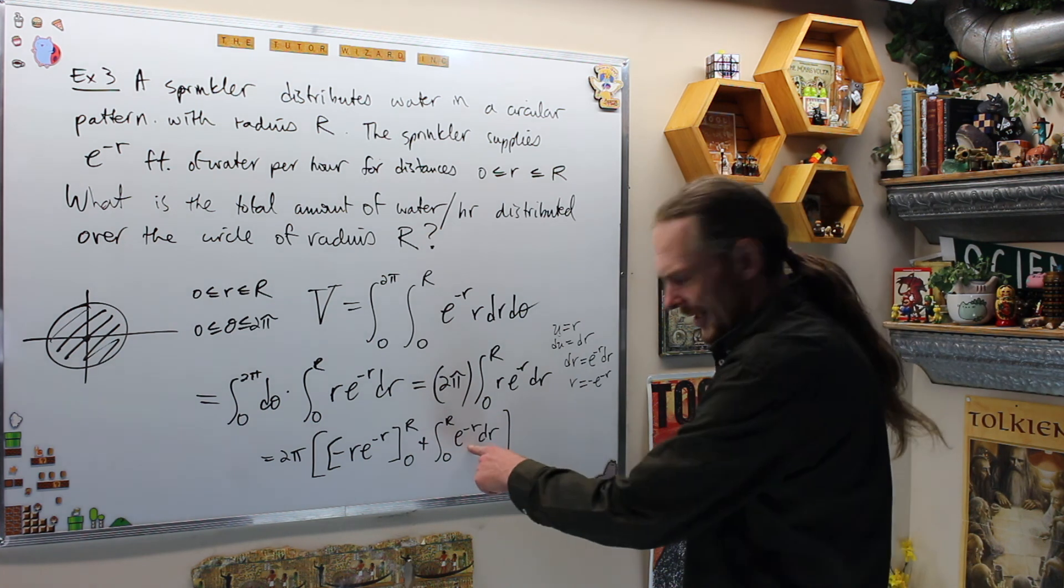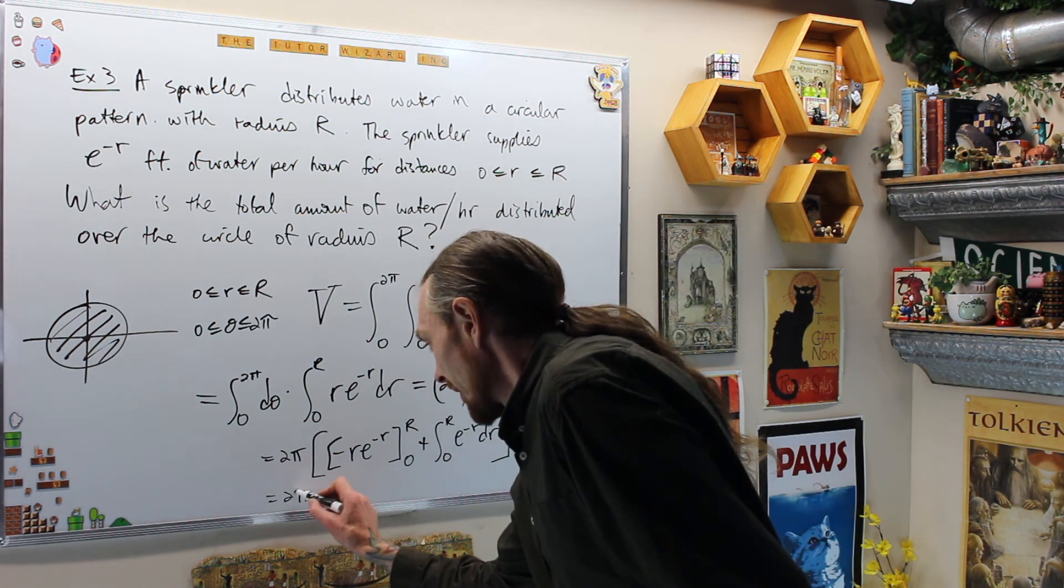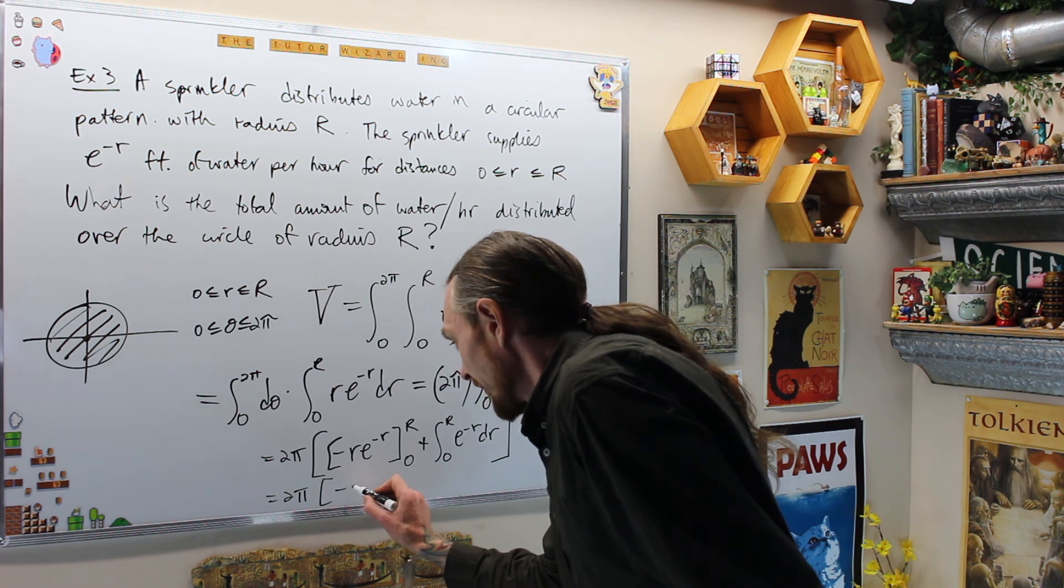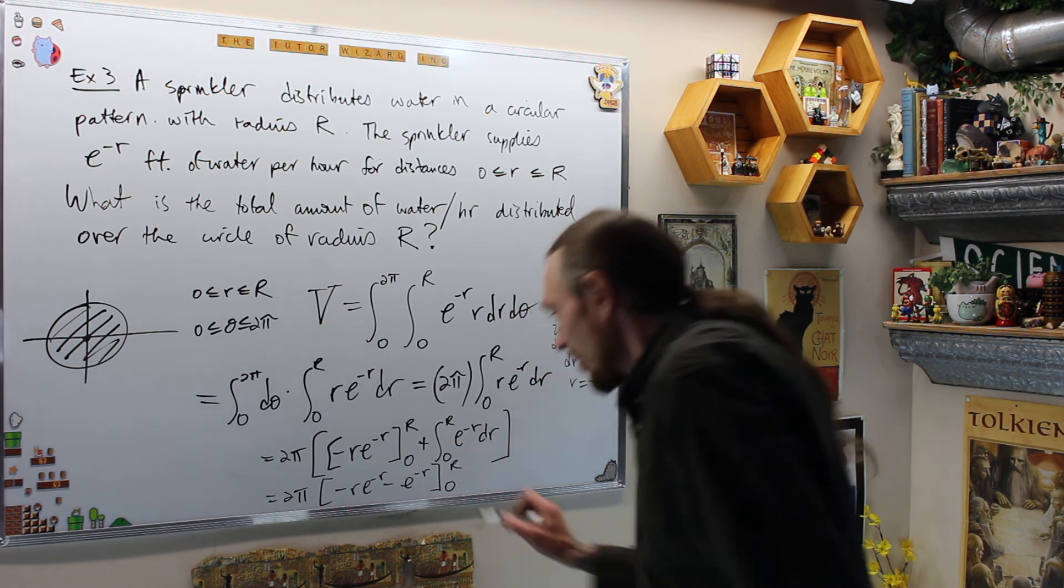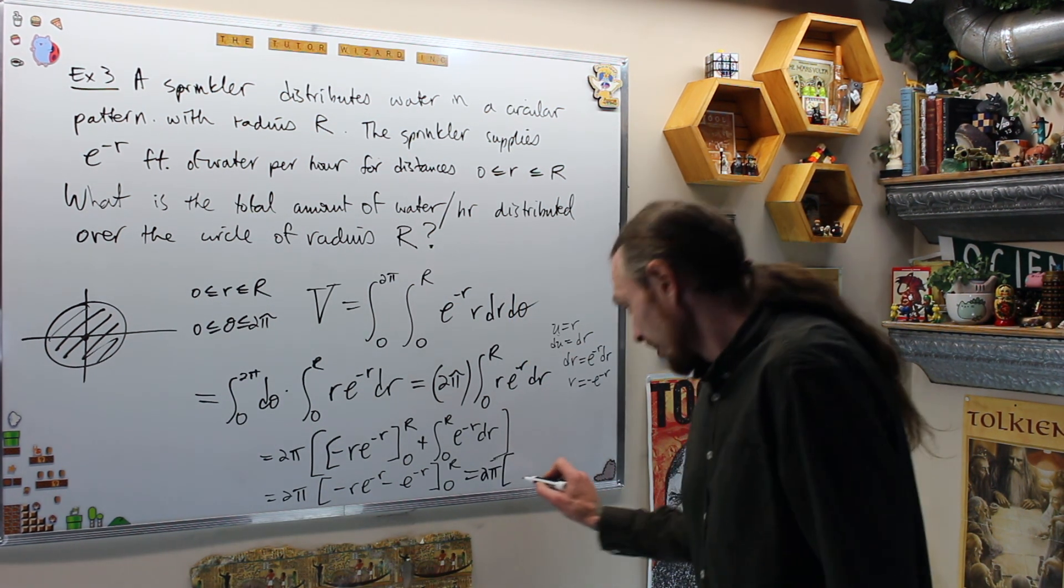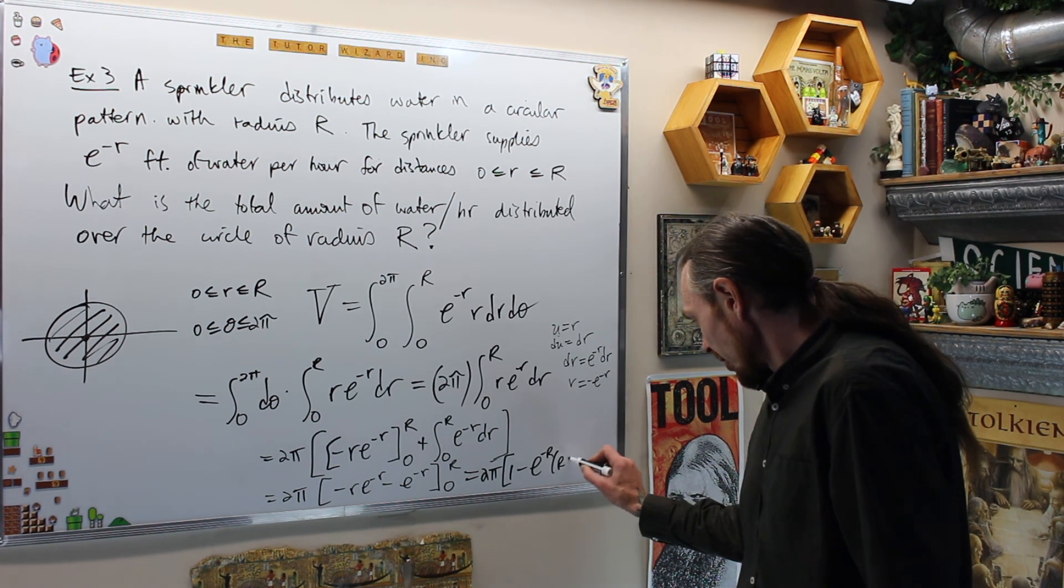However you want to do that, or you can integrate this one now and write that as equals 2 pi negative R, e to the negative R minus e to the negative R evaluated from 0 to R, cleaning this up 2 pi 1 minus e to the negative R, R plus 1.